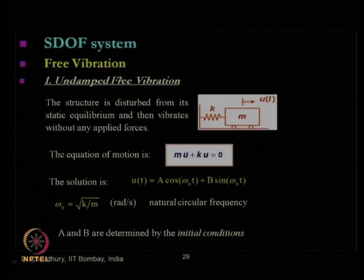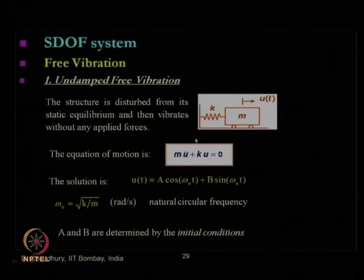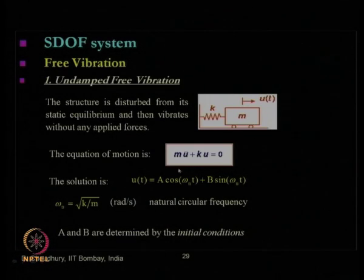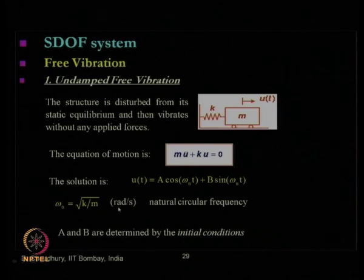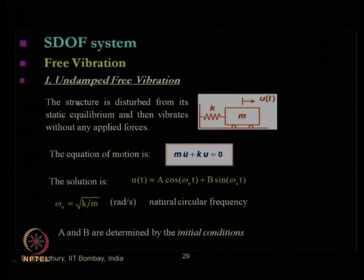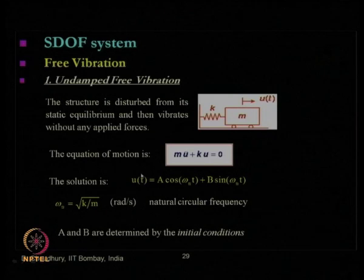The solution for free vibration under the simplest condition of undamped free vibration: the basic equation reduces to m×ü + k×u = 0. The solution of this second-order differential equation is u(t) = A×cos(ωₙ×t) + B×sin(ωₙ×t), where ωₙ is called the natural circular frequency expressed as √(k/m) in units of radians per second. A and B are constants determined from the initial conditions — at t = 0, there will be some initial displacement u₀ and initial velocity u̇₀.